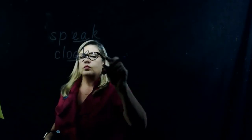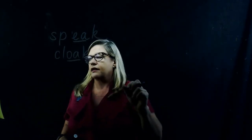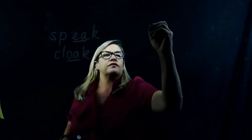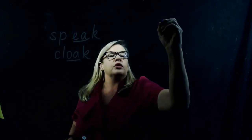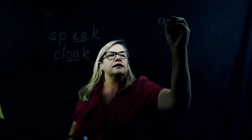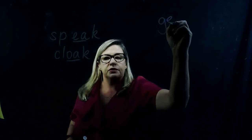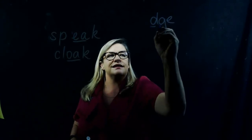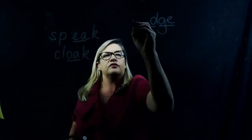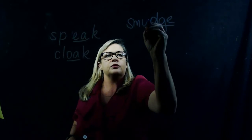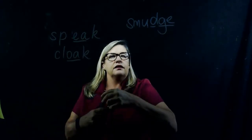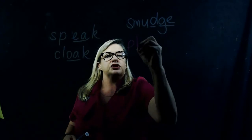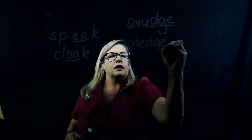The next rule we've been learning about this term: after a short vowel, if the word ends in G-E such as smudge, we need to put a D in front of it — so it's D-G-E. Another example would be pledge.